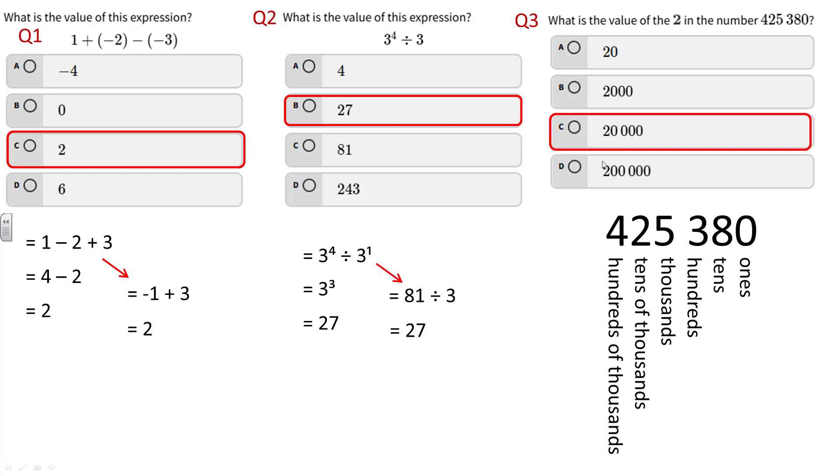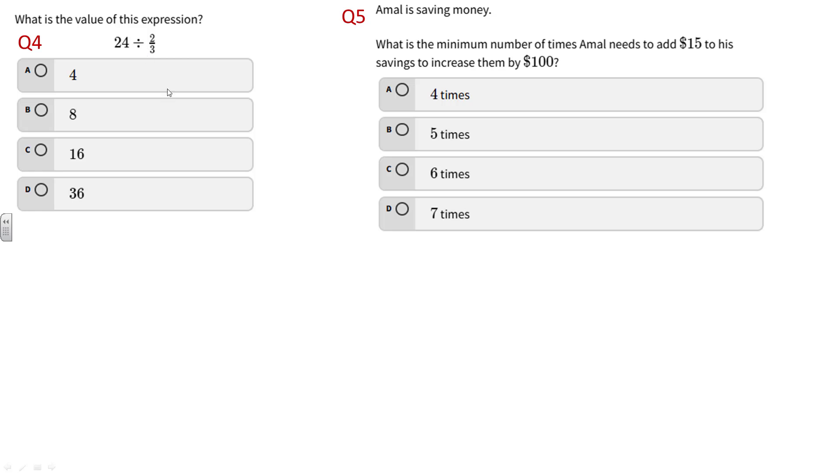What's the value of this expression: 24 divided by 2/3? Dividing is the same as multiplying by the reciprocal, so we flip 2/3 upside down to become 3/2. 24 is the same as 24/1. When you multiply fractions, multiply numerators on top and denominators on the bottom: 24 times 3 on top is 72, and 1 times 2 on the bottom is 2. Two divides into 72 evenly 36 times, so the answer is 36.